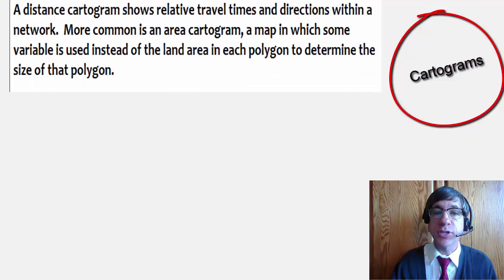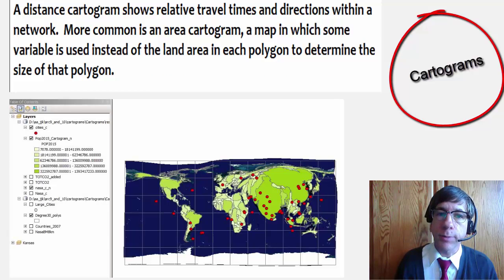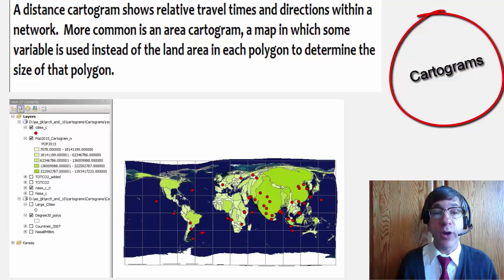Now a distance cartogram shows relative travel times and directions within a network. More common is an area cartogram, a map in which some variable is used instead of a land area in each polygon to determine the size of that polygon.